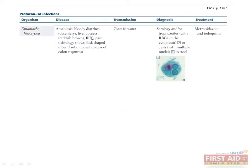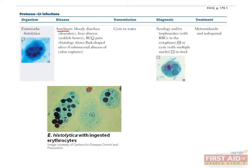The next protozoan is Entamoeba histolytica, which causes an infection called Amoebiasis. It is spread by cysts in fecally contaminated food or water, and causes bloody diarrhea or liver abscesses with right upper quadrant pain. Entamoeba is capable of ingesting red blood cells; therefore, it might be possible to see red blood cells within the cytoplasm of the parasite. The figure shows Entamoeba in trophozoite form, with ingested red blood cells as black dots within the cytoplasm. Remembering that Entamoeba ingests red blood cells may help you recall that this protozoan causes bloody diarrhea or dysentery.